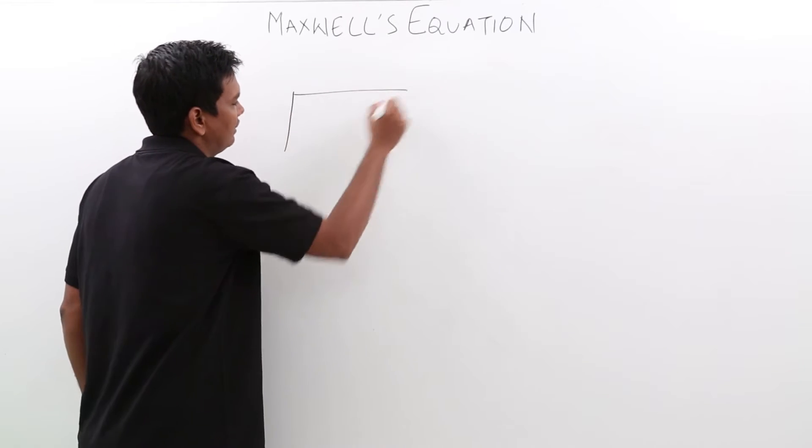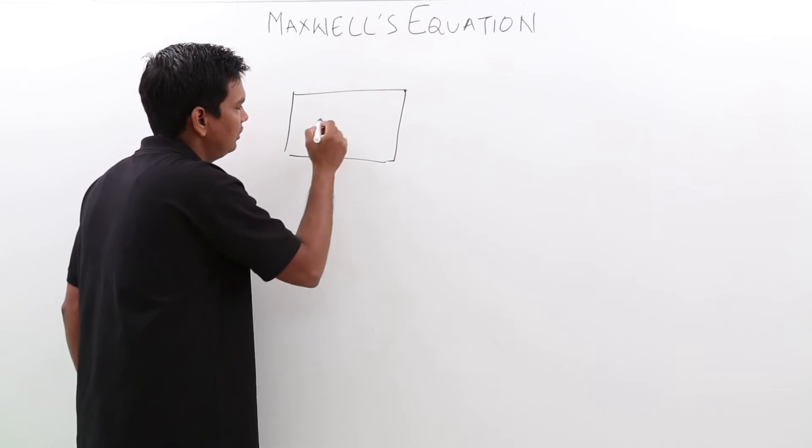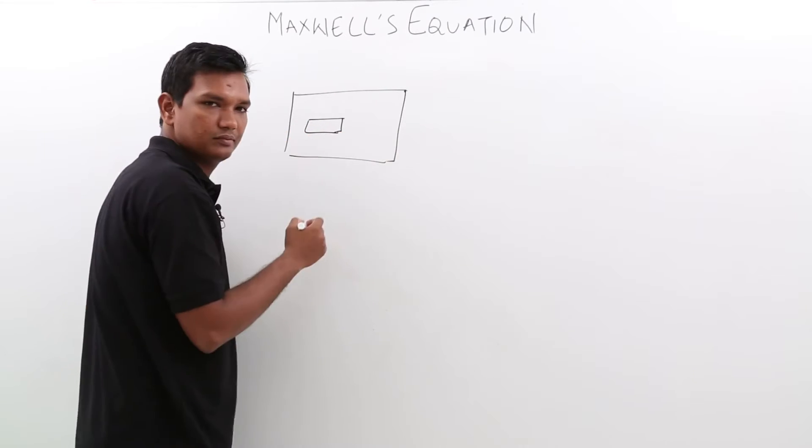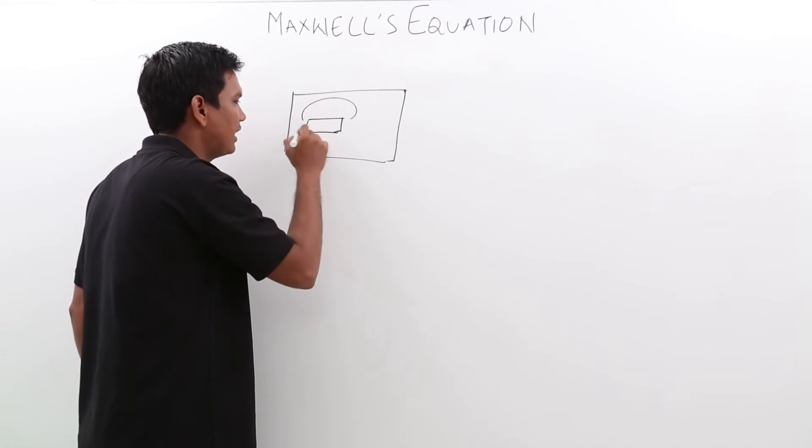Let us say that I have a box. If I place a magnet there, as you know that magnet will have a magnetic field lines.